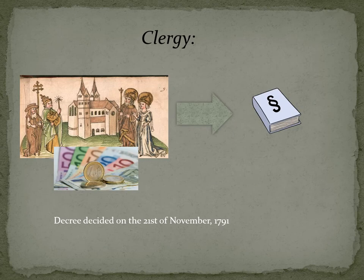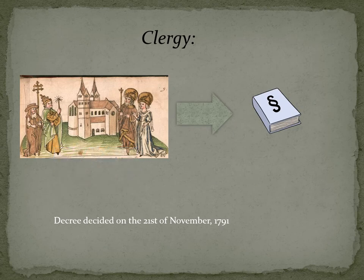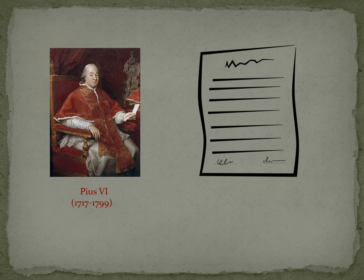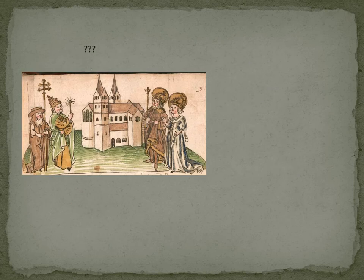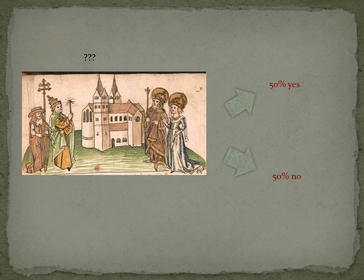The clergy was expropriated, and all members were forced to swear an oath to the new civil constitution, as decided by the decree of the 23rd of November 1790. Pope Pius VI refused this decree — in his eyes, it was absolutely nonsense. The clergy was in a dilemma; only half obeyed. This led to the foundation of counter-revolutionary and religiously motivated uprisings.